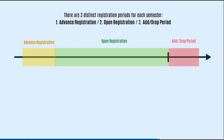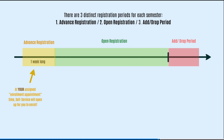At SEAC, there are three registration periods every semester: advanced registration, open registration, and the add-drop period. During advanced registration, each student is assigned an individual enrollment appointment time in self-service, which is the earliest time the portal will allow you to start enrolling for classes. The order of these times is determined based on the number of credits you've completed, so seniors go first, then juniors, sophomores, first years.